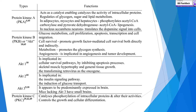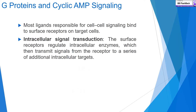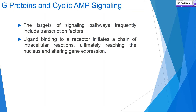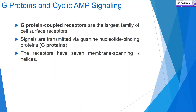Regarding protein and cyclic AMP signaling: most ligands responsible for cell-to-cell signaling bind to surface receptors on target cells, initiating intracellular signal transduction. The surface receptor regulates intracellular enzymes that transmit signals from the receptor to a series of additional intracellular targets. The targets of signaling pathways frequently include transcription factors — ligand binding to a receptor initiates a chain of intracellular reactions ultimately altering gene expression.